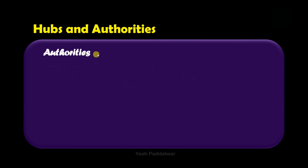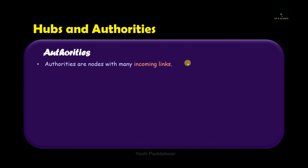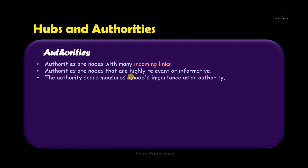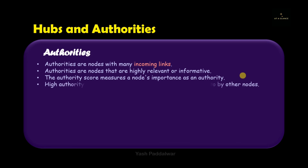Now we'll move on to authorities. Authorities are the nodes with many incoming links — exactly the opposite of hubs. In hubs we look at outgoing links, but for authorities we look at incoming links. If a web page has many incoming links, that web page is very much relevant and informative, because if many other web pages are pointing to it, there must be valuable information in it. Hence these are called authorities and they are of the highest relevance.